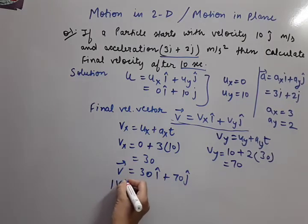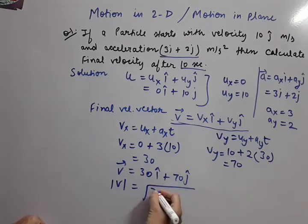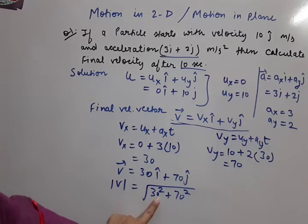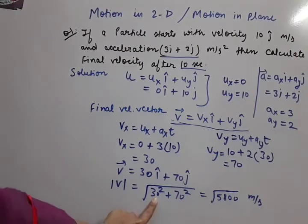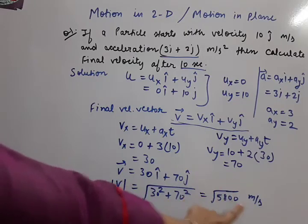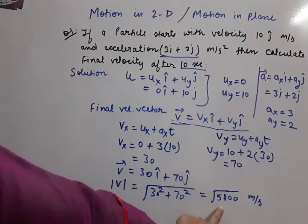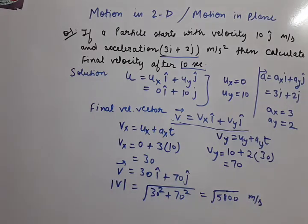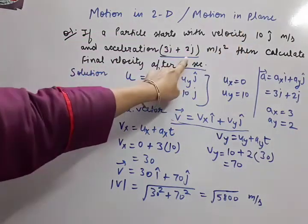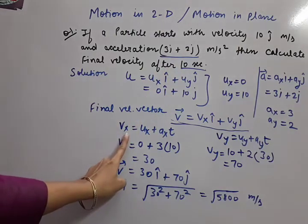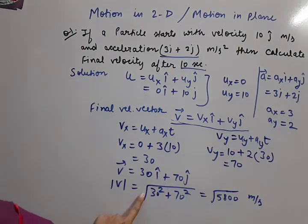Now, magnitude of velocity |v|: we put a square root and write vx² + vy² under it. So 30² = 900 and 70² = 4900. Total is 5800 under root. It is not compulsory to simplify this root further — √5800 m/s is the answer. So using the vx and vy equations we got this answer easily from the given initial velocity, acceleration, and time.